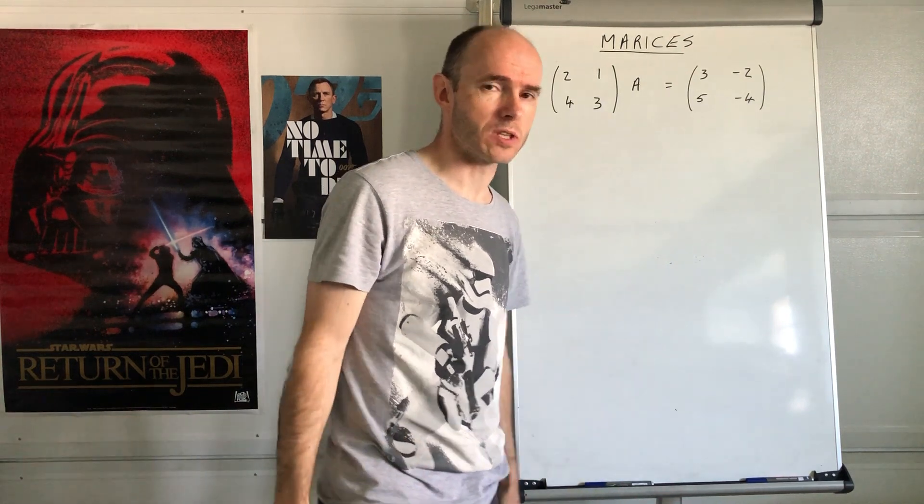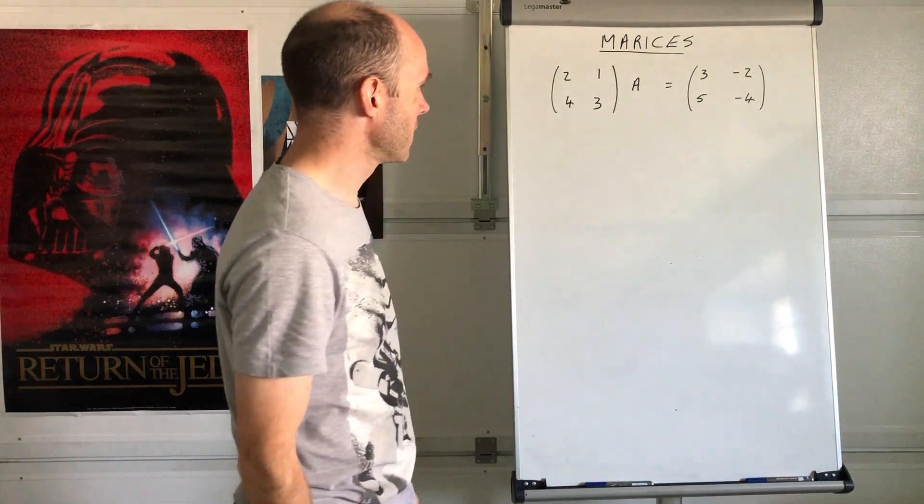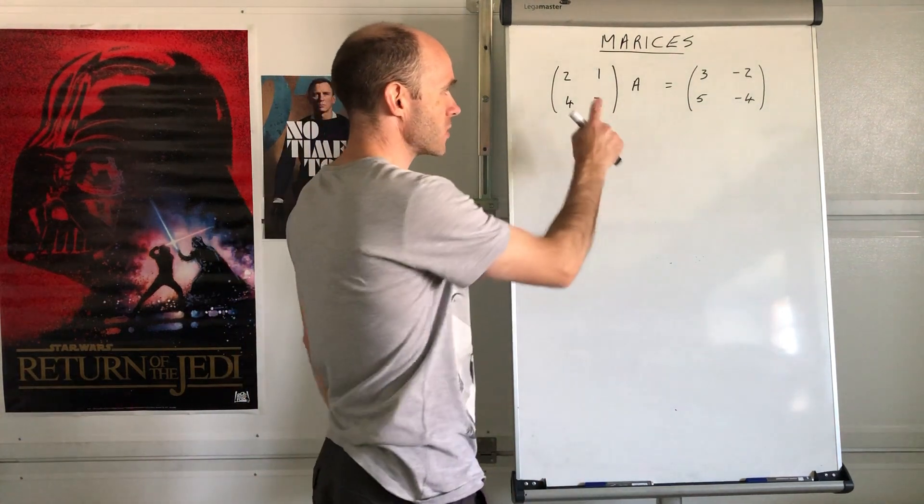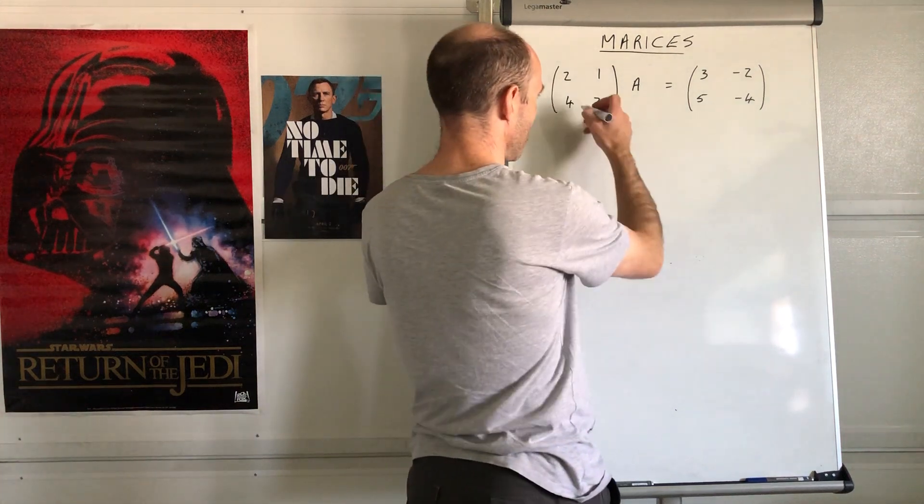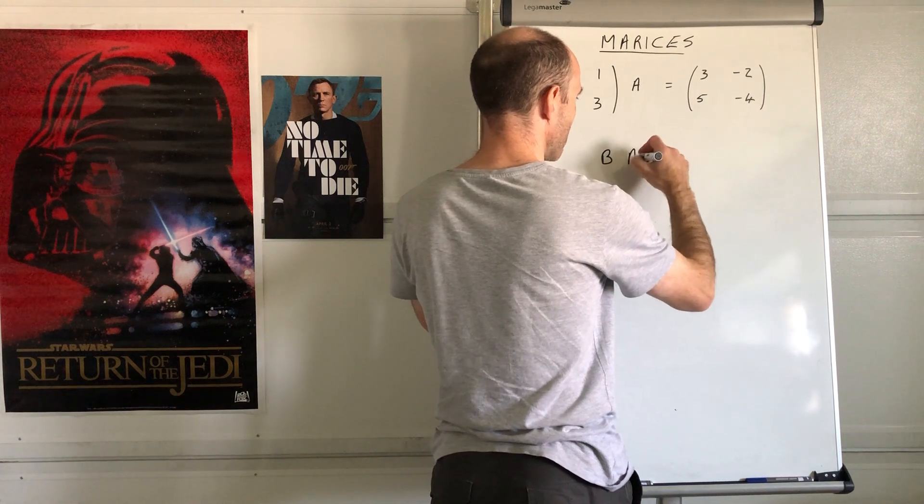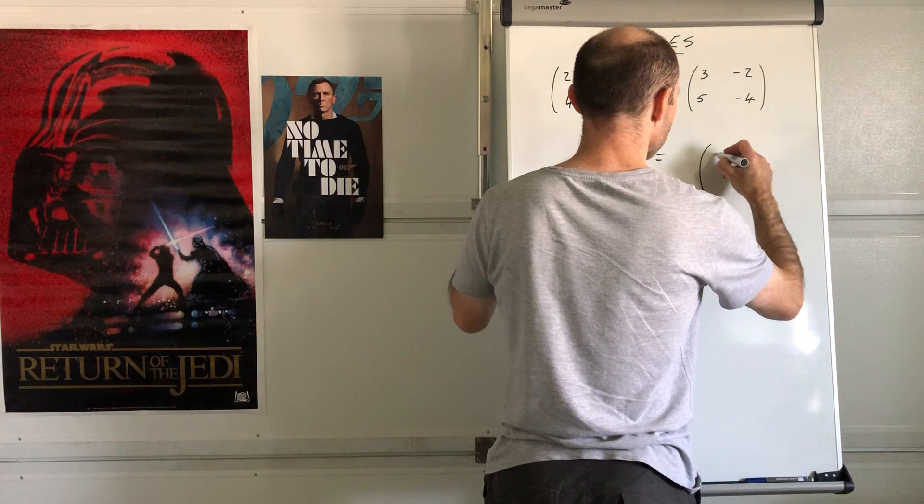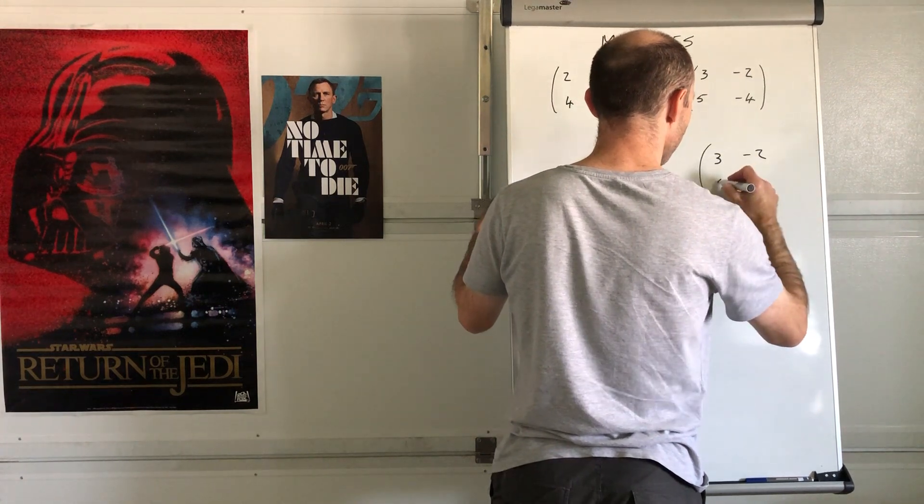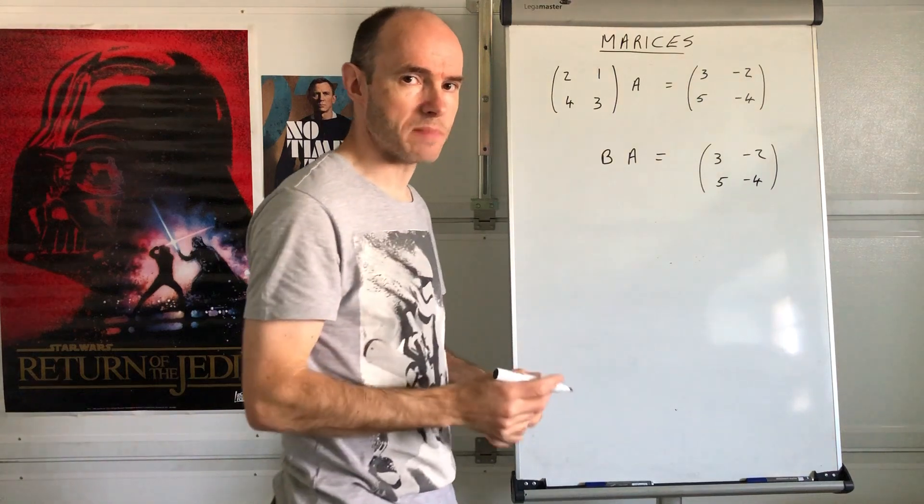Your only clue is you've got to use inverse matrices to do it. How does it work? Well, suppose you can find the inverse of this matrix here. I'm going to rewrite this. I'm gonna call that matrix B. So you have B times A is equal to, let's write it out, 3, -2, 5, -4.